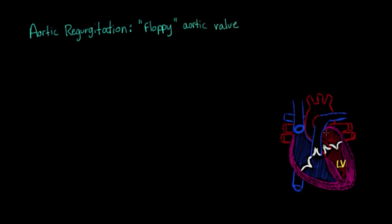And so this is kind of a floppy aortic valve. So here we'll label the LV, the left ventricle, the LA, the left atrium, the aorta. And you'll see that normally the blood goes out of the aorta into the rest of the body like we showed before.